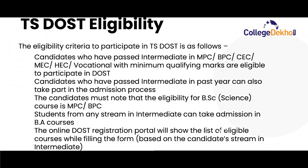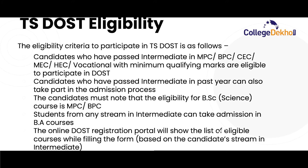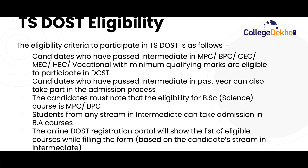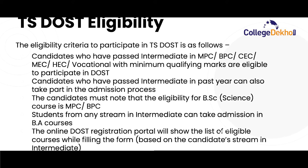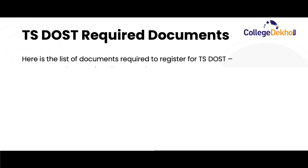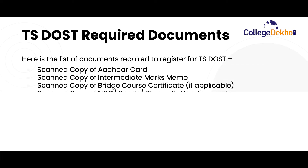The candidate must note that eligibility for BSc in science courses is MPC or BPC. Students from any stream in intermediate can take admission to BA courses. The online DOST registration portal will show the list of eligible courses while filling the form, based on the candidate's stream at the intermediate level.